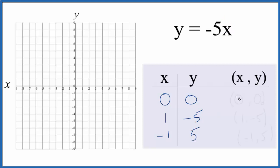So these are the points we'll graph for the equation y equals negative 5x. So the first point, 0, 0, that's right here. Then we go to 1, negative 5, so x is 1, y is negative 5.